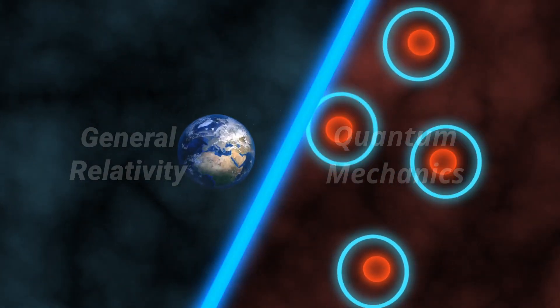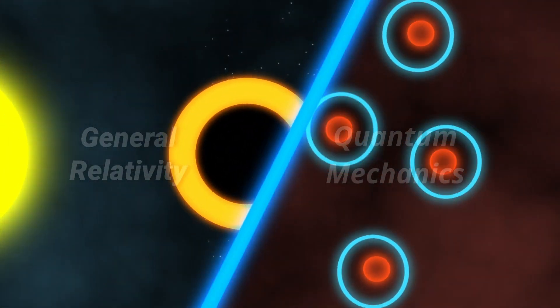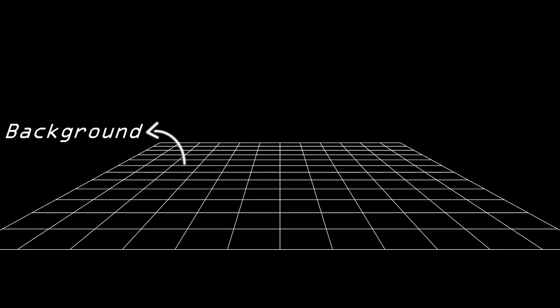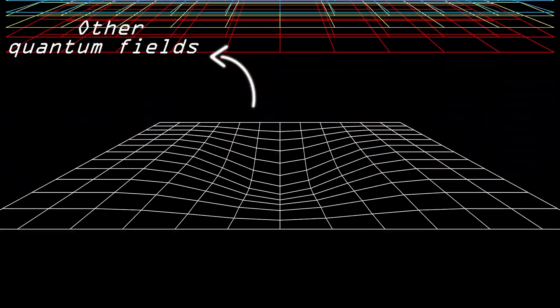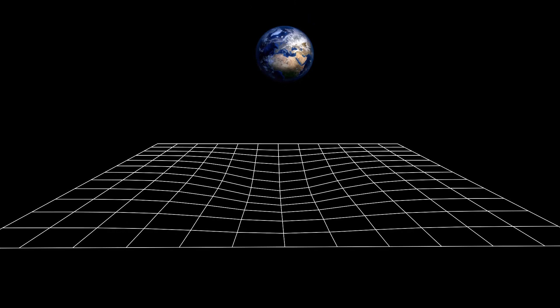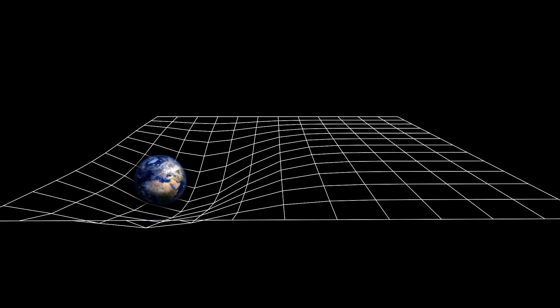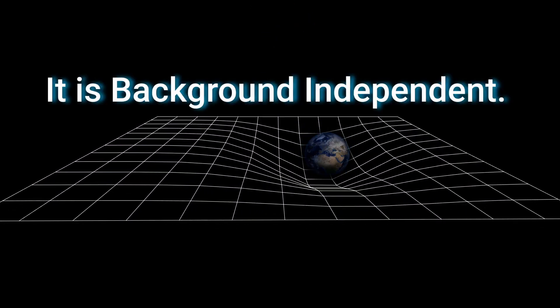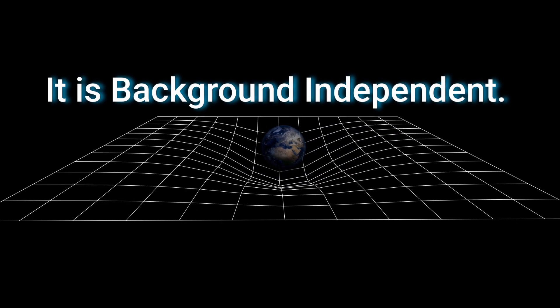But this is when the incompatibility between general relativity and quantum mechanics really comes to the forefront, because gravity is kind of an odd one out among all the forces in the universe. Unlike any other force, the gravitational field of general relativity is not just a field on top of some background space — instead, it is spacetime itself. It is the background through which everything moves and in which everything exists. So in general relativity, the background is dynamic: it can bend or curve depending upon the distribution of energy, making it background independent.